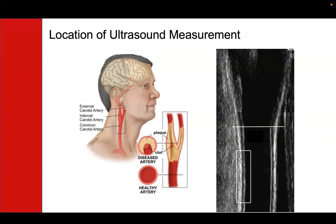We measure here because it's easy to access, and also because when we find a process happening in the artery walls here, it's reflective of what's happening in the arteries and the rest of your body as well, including your heart.